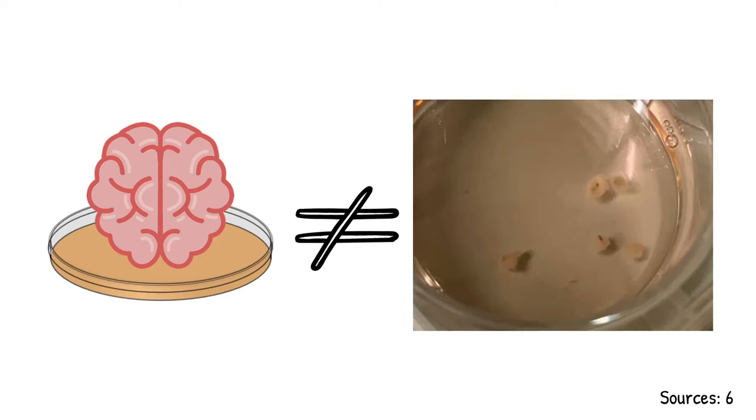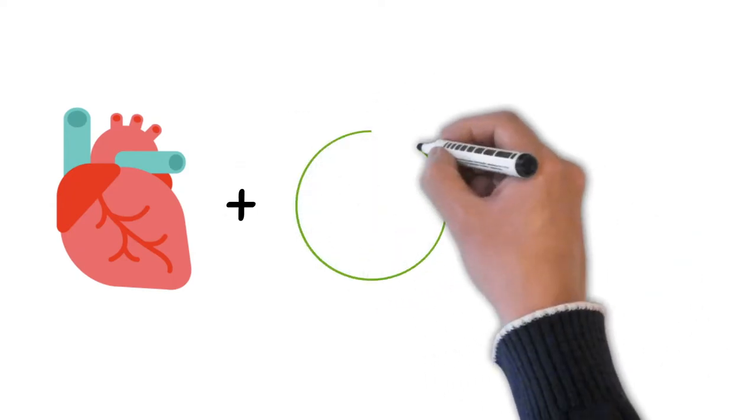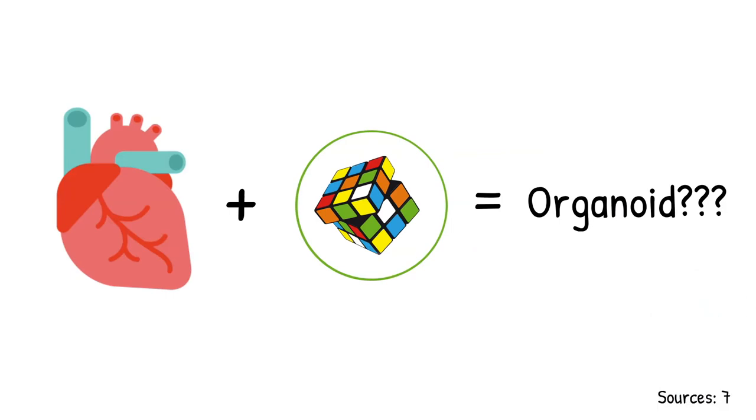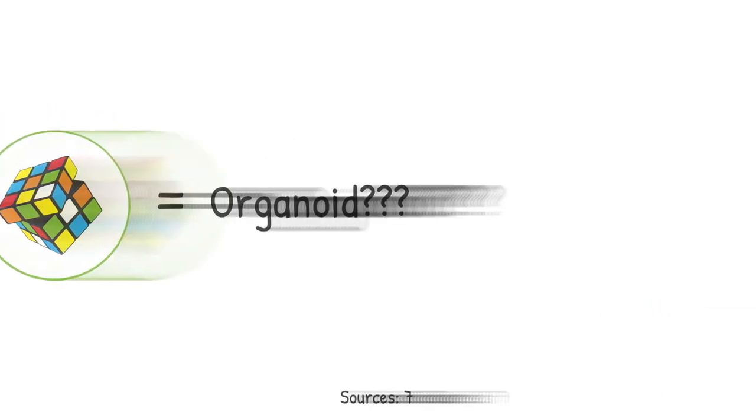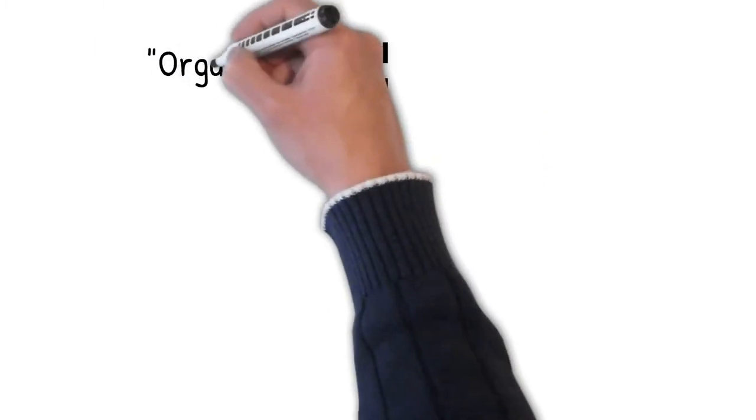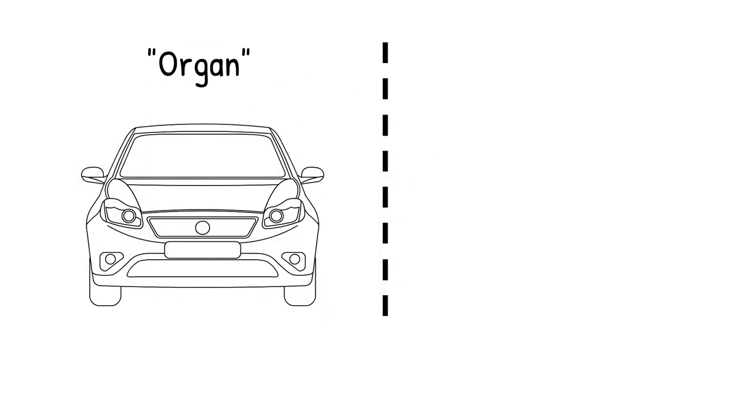Pretty cool. The structures of organoids are also misarranged. Identifiable tissues and organ structures are present, but they may not be in their correct positions or connected to each other properly. Think of it like this: if your organs are like a car, then an organoid is like a smaller, jumbled-up version of that car.